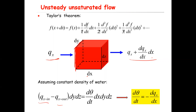The area here will be dz times dy. So dy times dz times the change in velocity equals the time rate of change of the volume of water in the control volume. Remember, the definition of water content theta is the volume of water divided by the total volume. The total volume of this control volume is dx times dy times dz, and this dx dy dz cancels out, leaving us with the time rate of change of the volume of water.